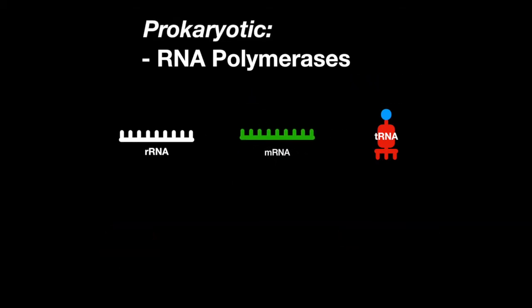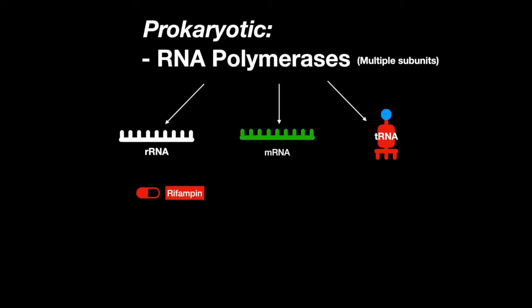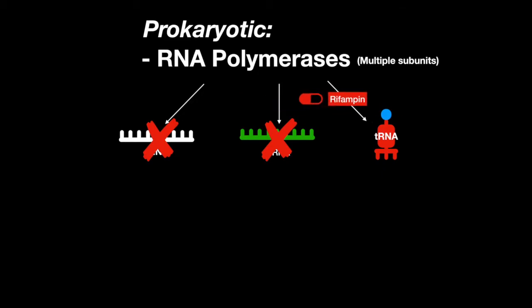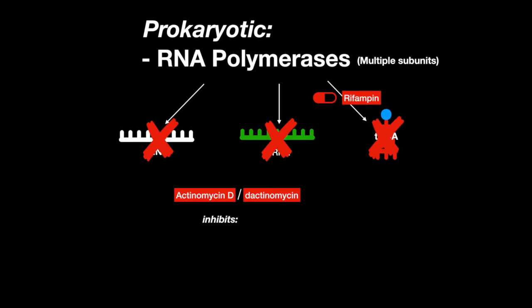Prokaryotic RNA polymerase is much simpler than eukaryotes, because it has just one RNA polymerase with multiple subunits that makes all three kinds of RNA. The drug rifampin inhibits DNA-dependent RNA polymerase in prokaryotes. Actinomycin D, or dactinomycin, inhibits RNA polymerase in both prokaryotes and eukaryotes.